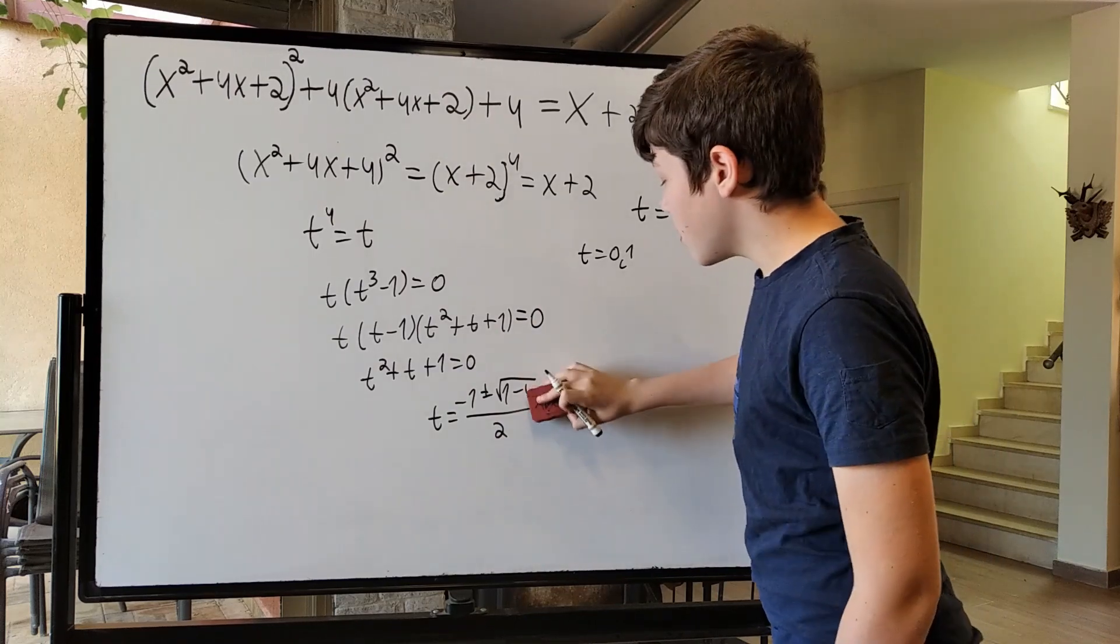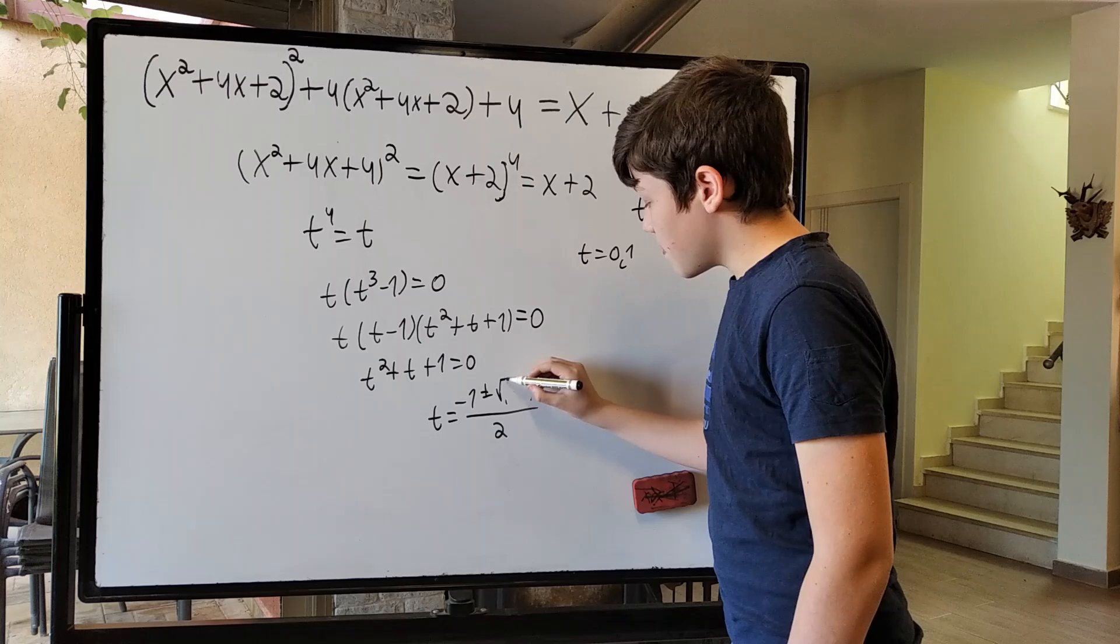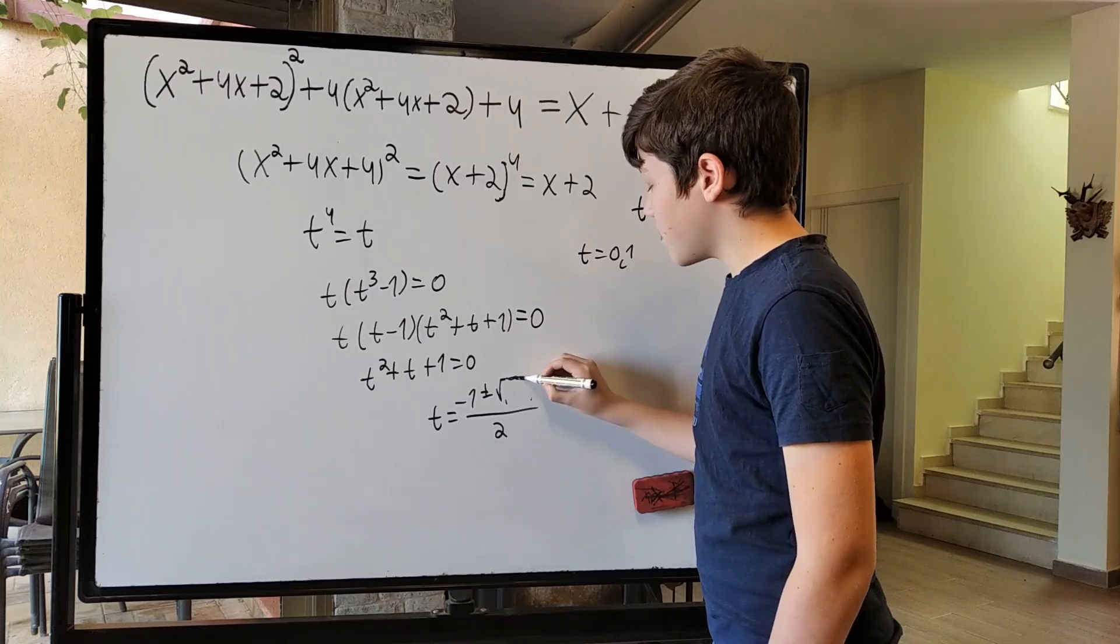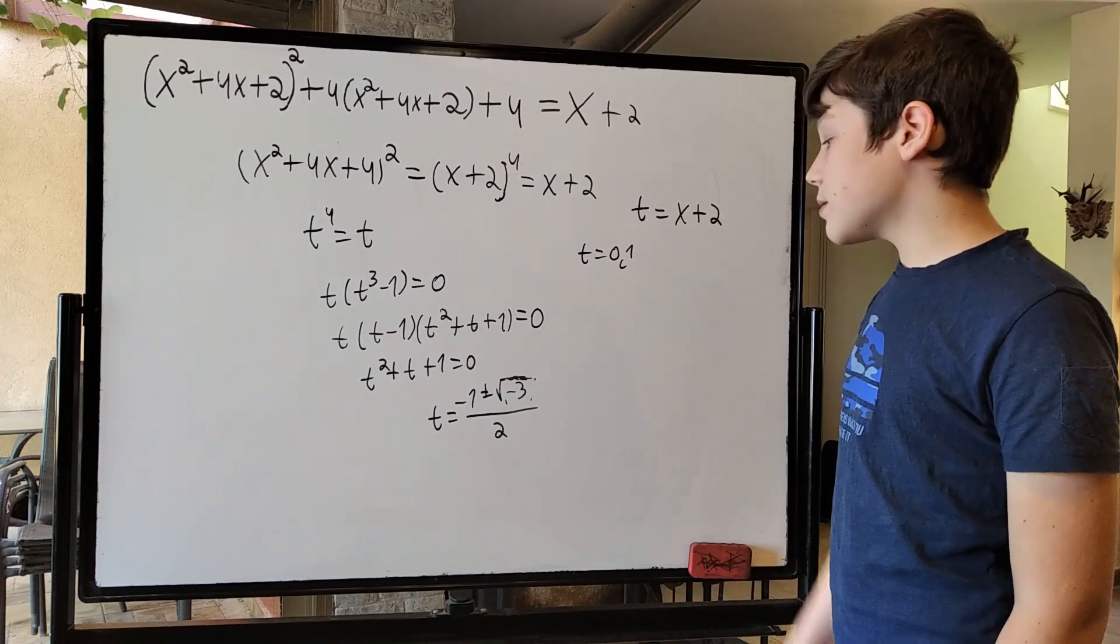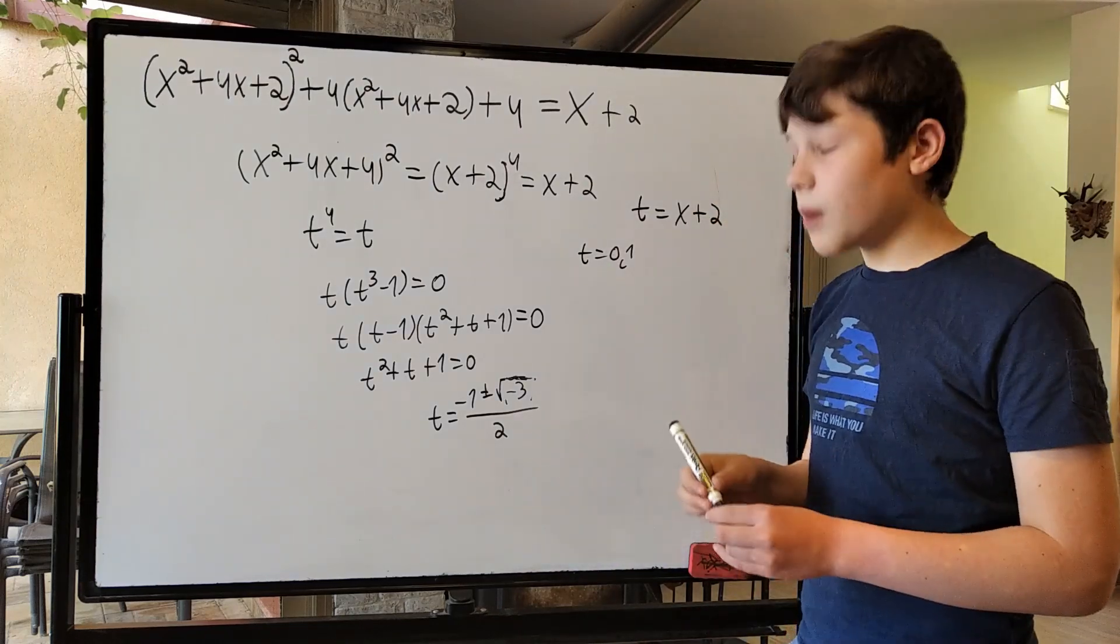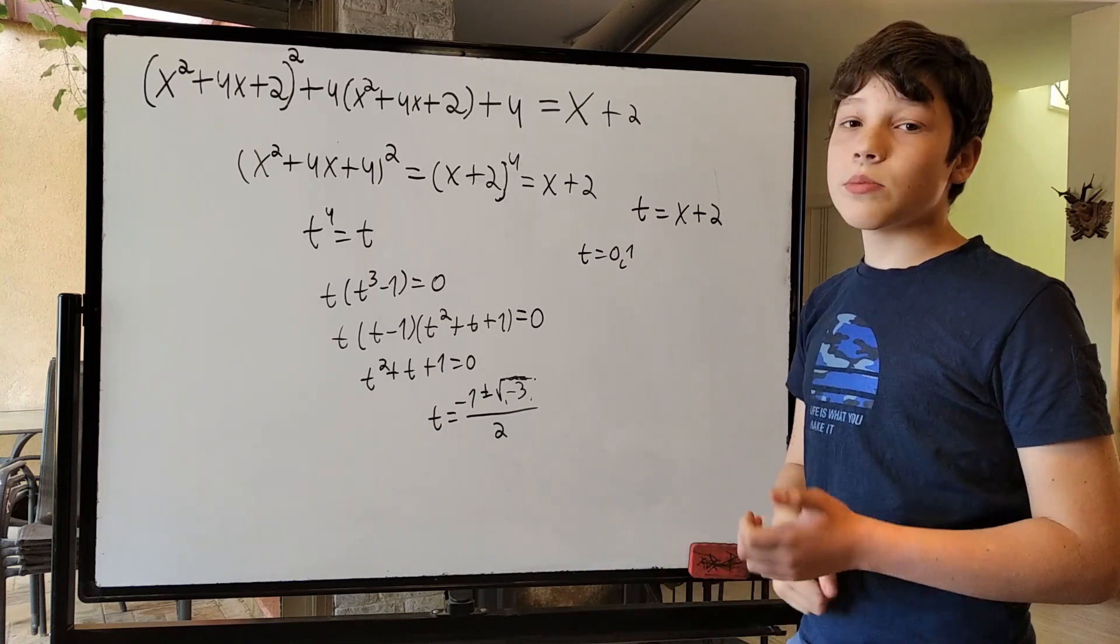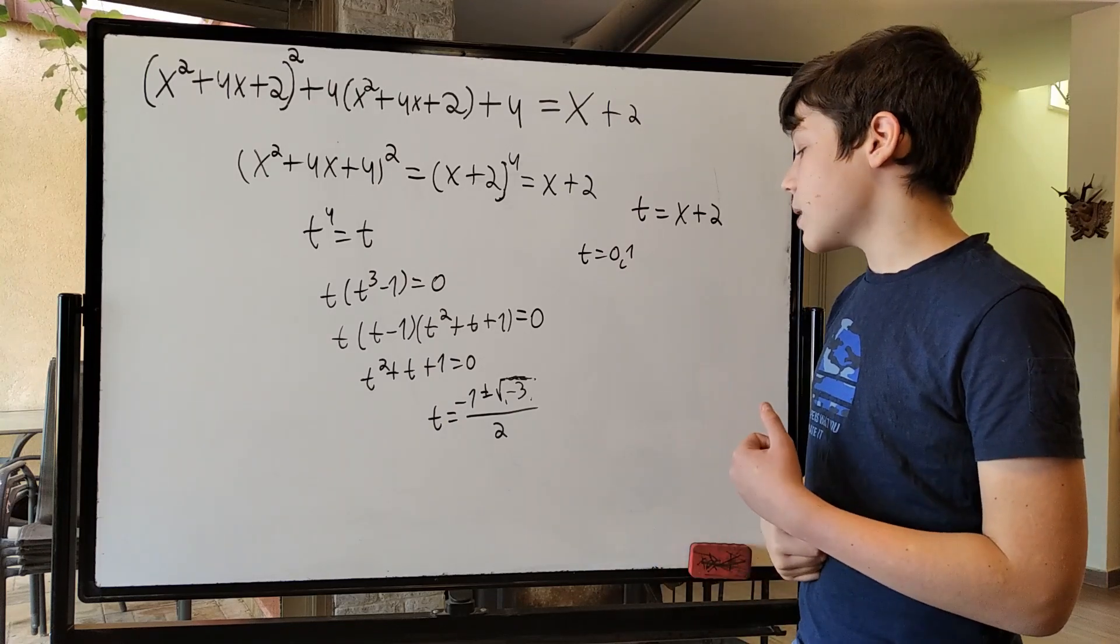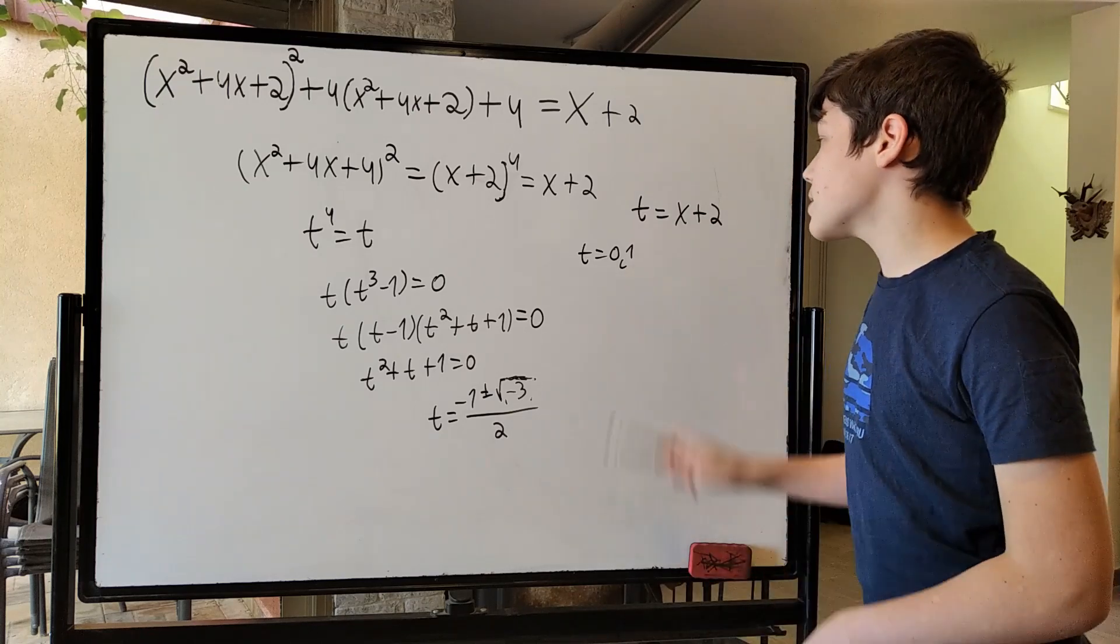Now, 1 minus 4 can be looked at as negative 3, and this gives us our complex solutions. Since we can't have square root of negative 3 unless we include complex solutions as well. Now, these are all of our solutions to t.